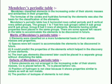Merits of Mendeleev's Periodic Table. Elements were classified on a more fundamental basis of their atomic masses and properties. Spaces were left vacant to accommodate elements to be discovered in the future, and the table could predict the properties of elements, which helped in the discovery of new elements. The inert gas elements discovered later could be placed in a separate group without disturbing the table.